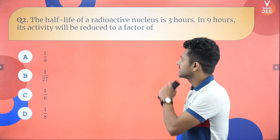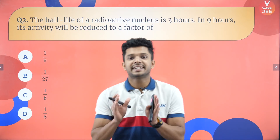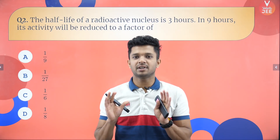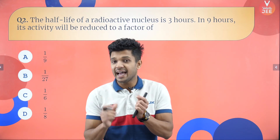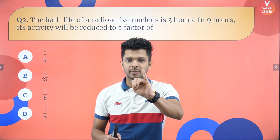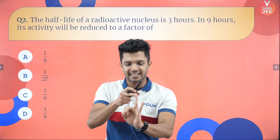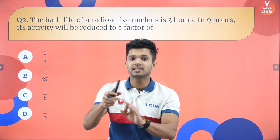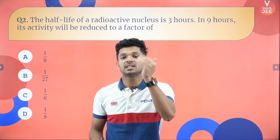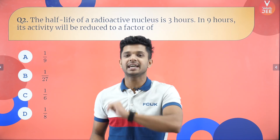Next question: the half-life of a radioactive nucleus is three hours. Half-life means the time required for a radioactive element to become half its amount after disintegration. In nine hours, how many half-lives are there? After three hours → half; after six hours → half again; after nine hours → half one more time. So three half-lives are present in nine hours.